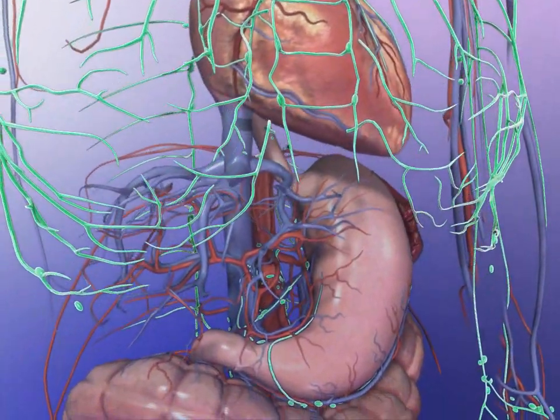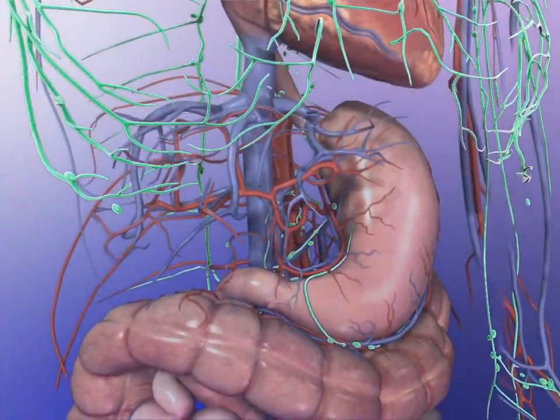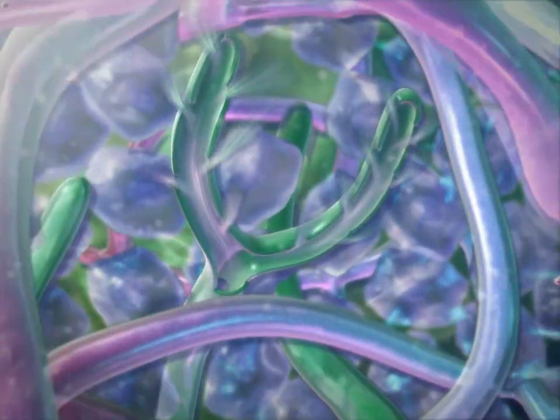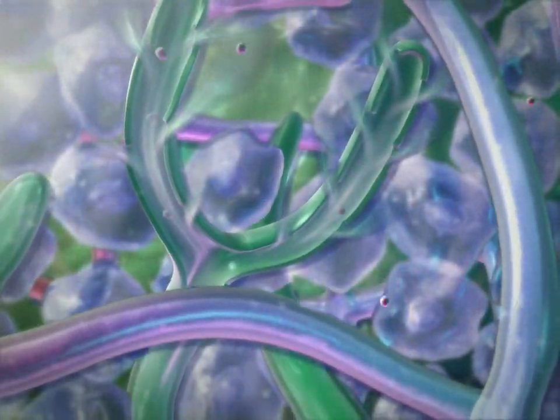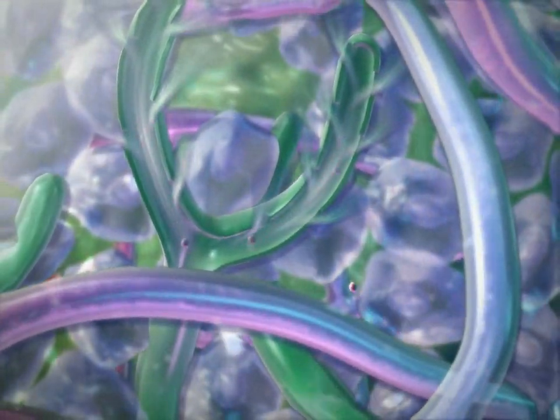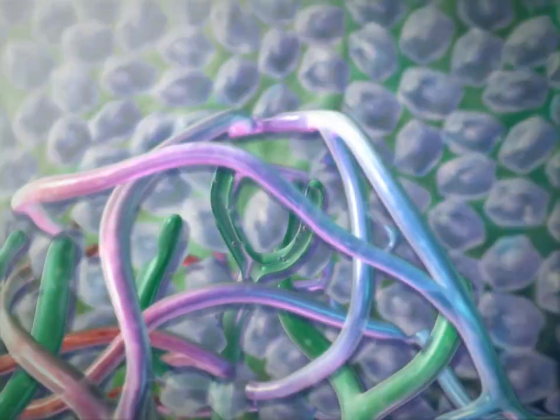Tissues in the body are surrounded by lymphatic vessels and capillaries of the circulatory system. As water and substances are exchanged between tissues and the bloodstream, unwanted substances enter the lymphatic network and travel towards nodes.